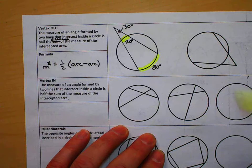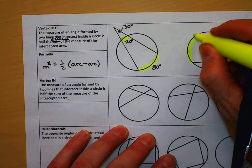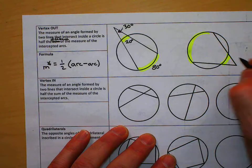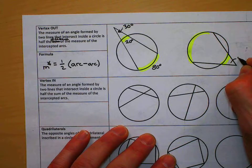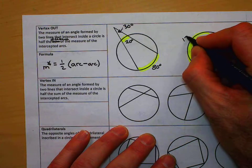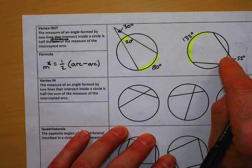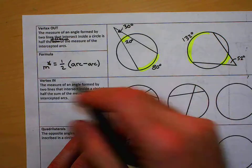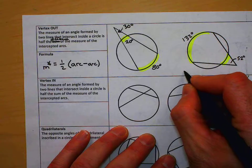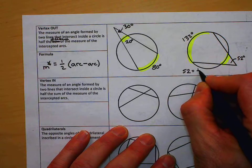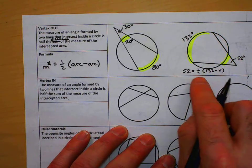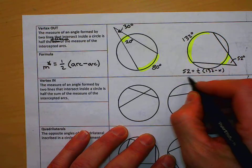We also could be given one of the arcs and the angle. If the angle here was 52 degrees and I knew that this was 132 degrees, if I want to find that inside one, I go ahead and force it into this. This is the larger arc. So I'm going to say 52 is equal to half of 132 minus x. Double both sides and that gets rid of the half.